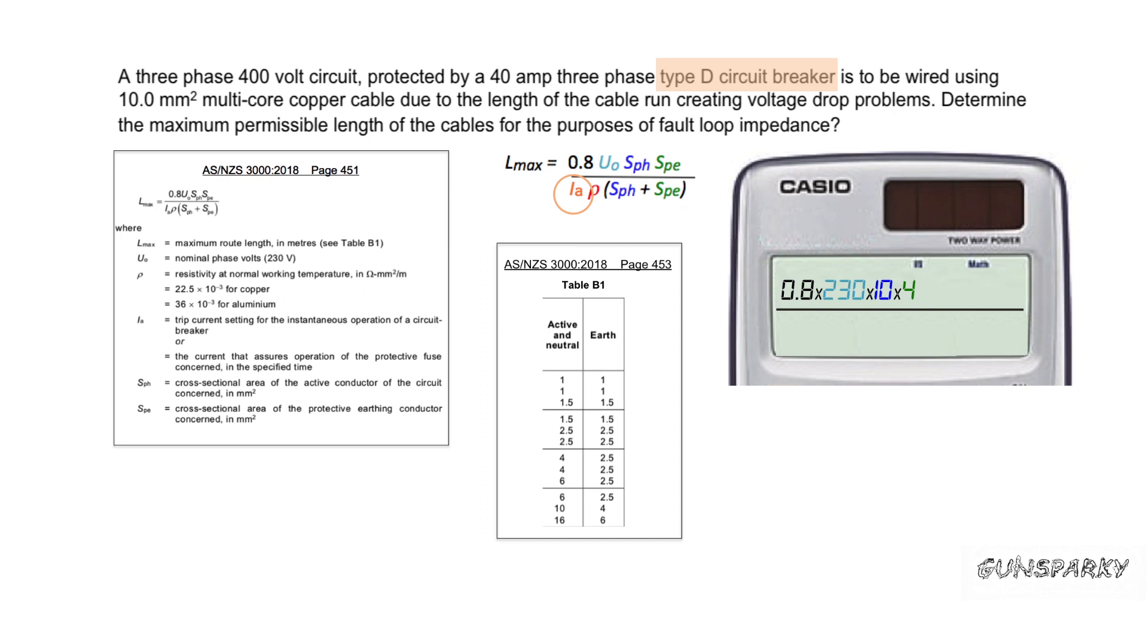And what is the rated current of that circuit breaker? The question shows us it's rated at 40 amps. So let's refer to page 449 of our AS3000. That tells us that the tripping current for a type D circuit breaker is 12.5 times the rated current, which is 12.5 times 40.